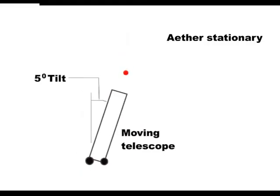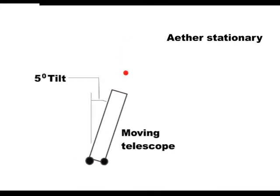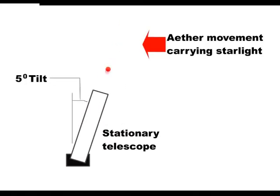Let us assume that the telescope was moving at 5 mph and had to be tipped 5 degrees. This 5 degree tipping, however,